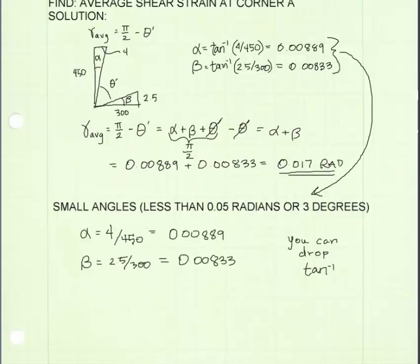Now a small angle is an angle that's approximately less than 0.05 radians, or 3 degrees. Because they're small angles, that means we can drop the trigonometric sign. So alpha can be calculated as just 4 divided by 450. And you can see that the answer we get is very close to the answer we got when we included the trigonometric sign, the tangent inverse. So the error is very small.